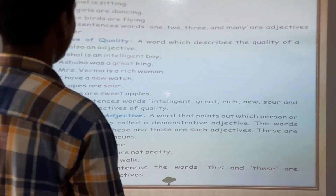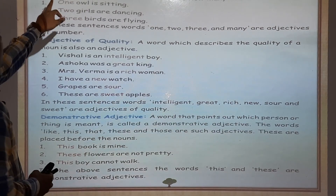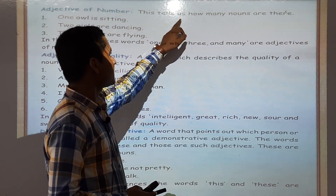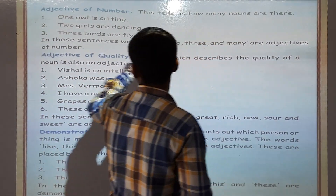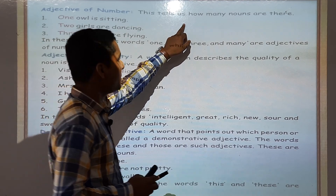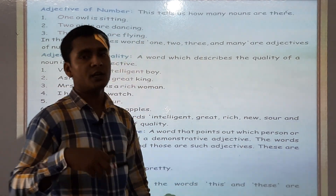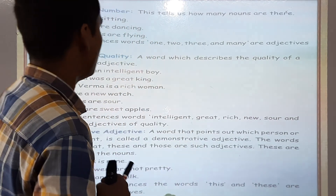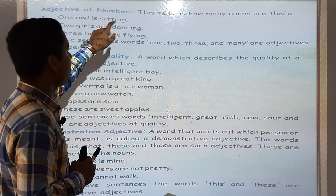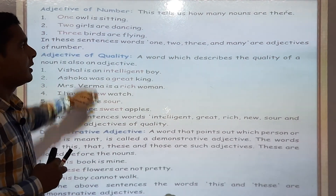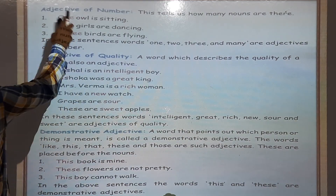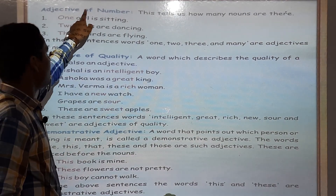Now page number 59. Next adjective — Adjective of Number. This tells us how many nouns are there. Adjective of Number humein kya batlata hai? This tells us how many nouns are there, yaani ki nouns ki sankhya ko yeh batlata hai. Jaise example mein dekha hai — one owl is sitting. Yahan pe sankhya bata raha hai, how many nouns are there. Sankhya kitni hai? One. So one hamaara kya hai? Adjective of Number hai.